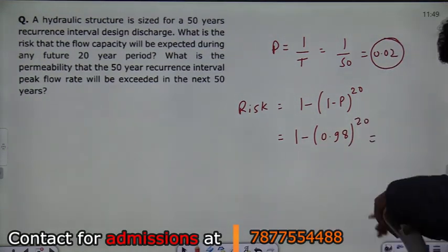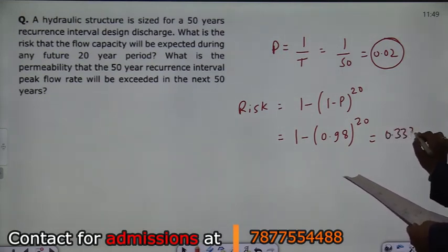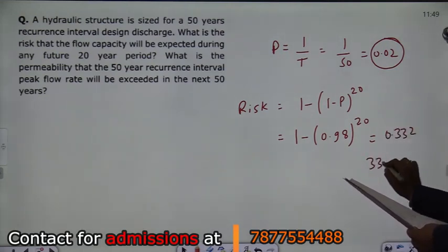So the value is 0.98 raised to the power 20. So 1 minus 0.98 raised to the power 20, that is coming out to be 0.332, that is 33.2%.